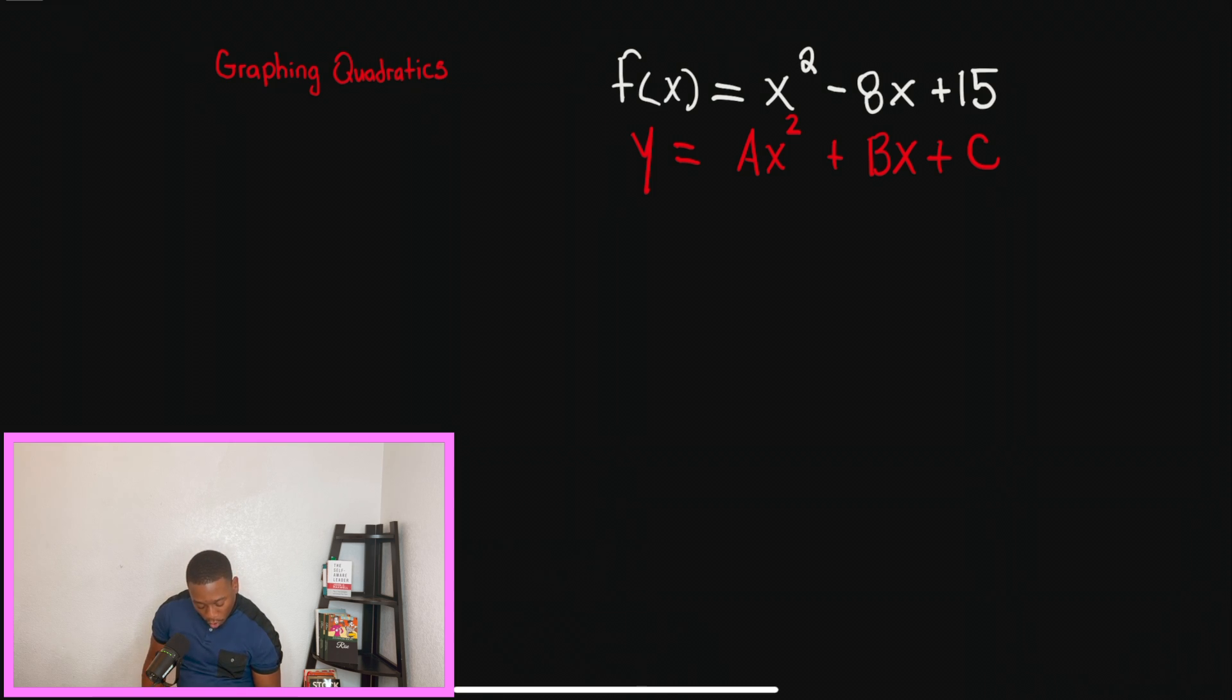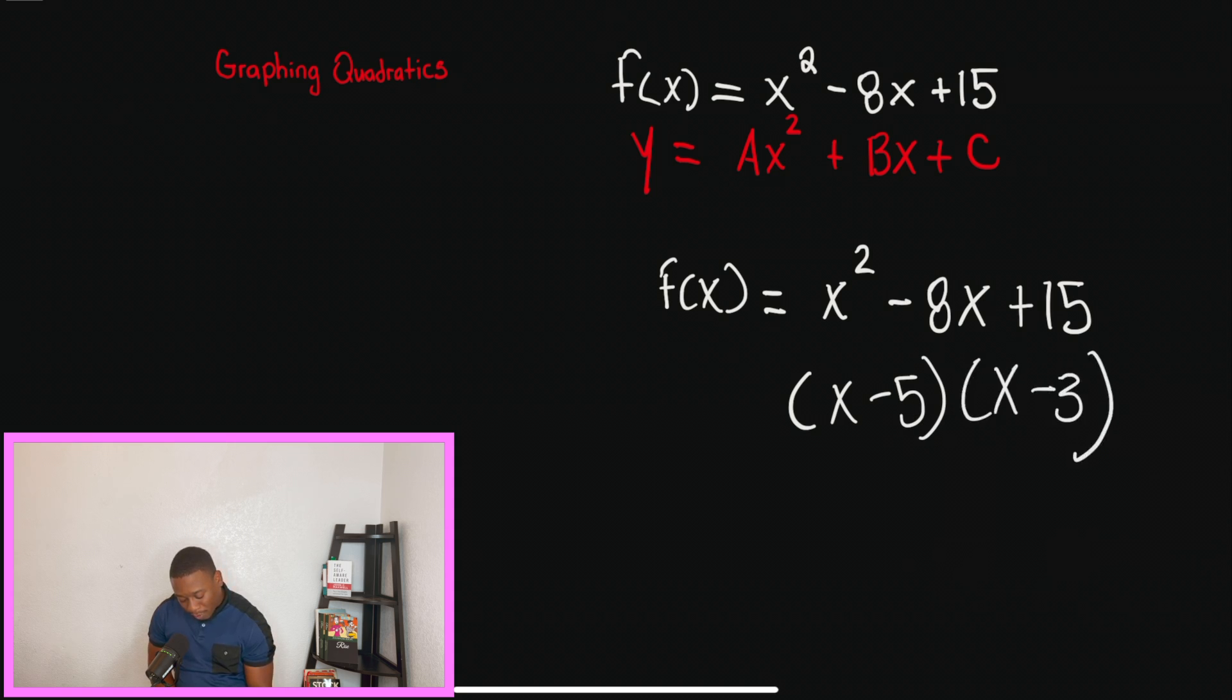When we go into graphing these quadratics, please understand that f(x) is the same as y, and right now we need to figure out what x is. So we are going to factor, and once we break down our factors, we're going to get x minus 5 times x minus 3.